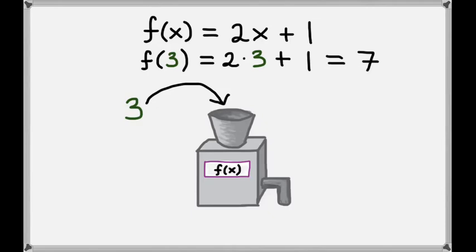So when I put 3 into this function, I can expect to get 7 out of it. Anytime I put 3 into this function, I'll get 7 out. In fact, for any number that I put into this function, there's only one number that will come out of the function. That's the definition of a function.